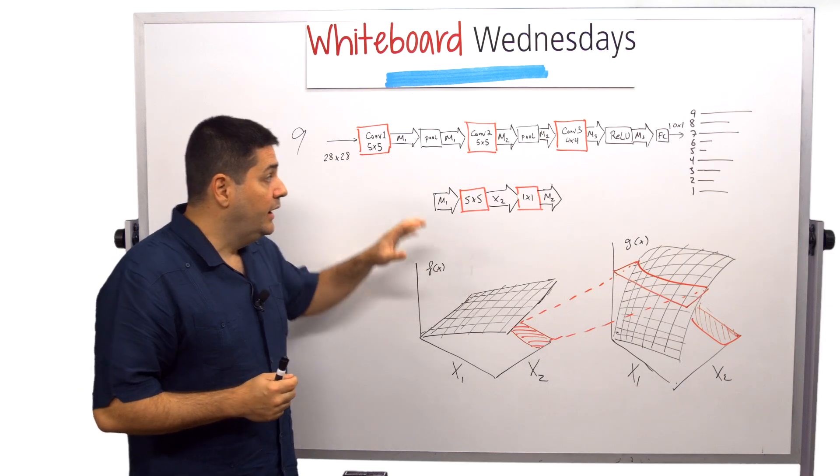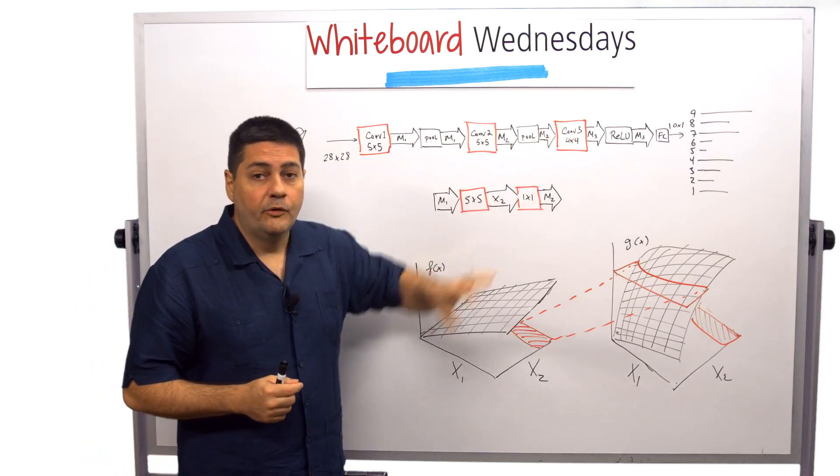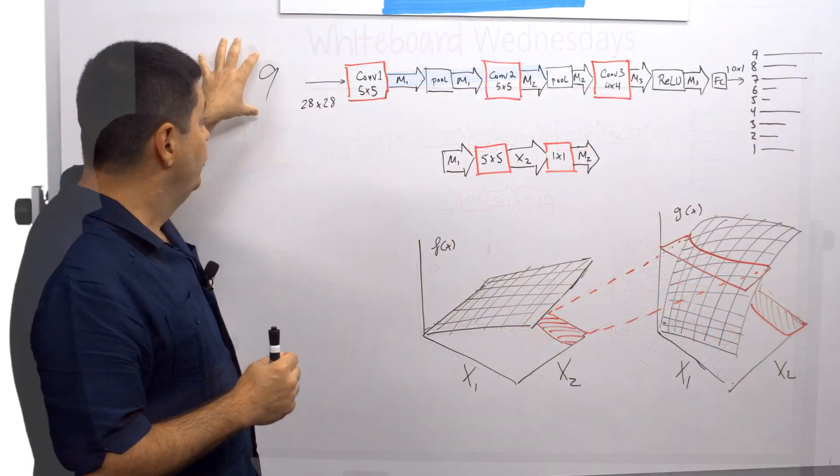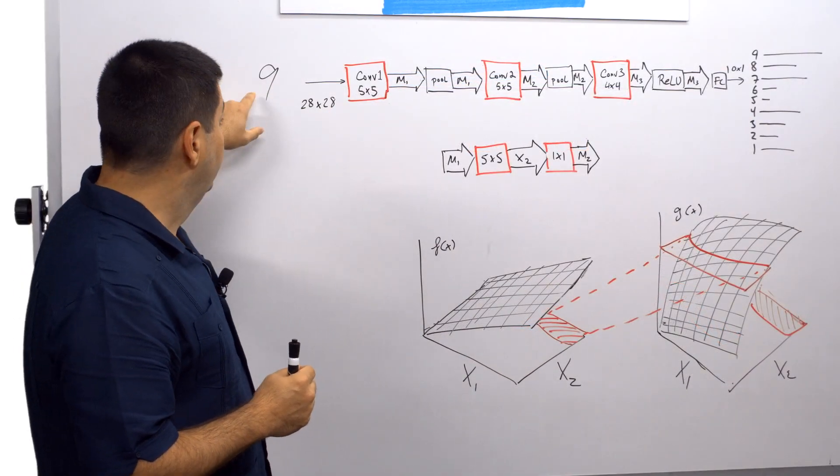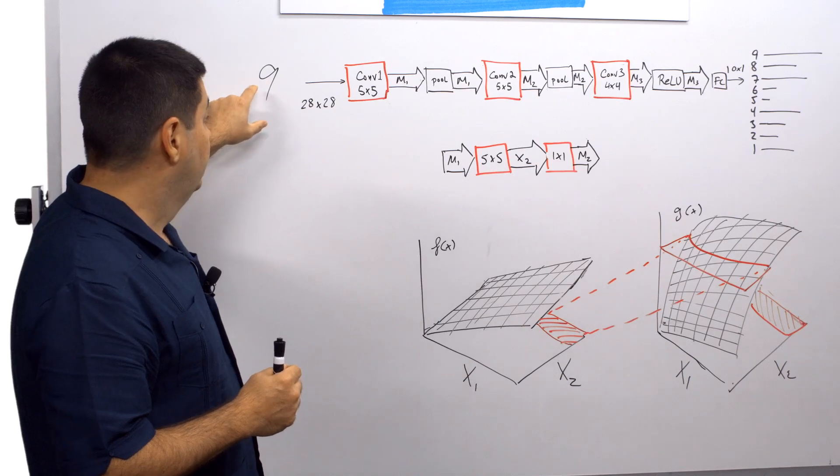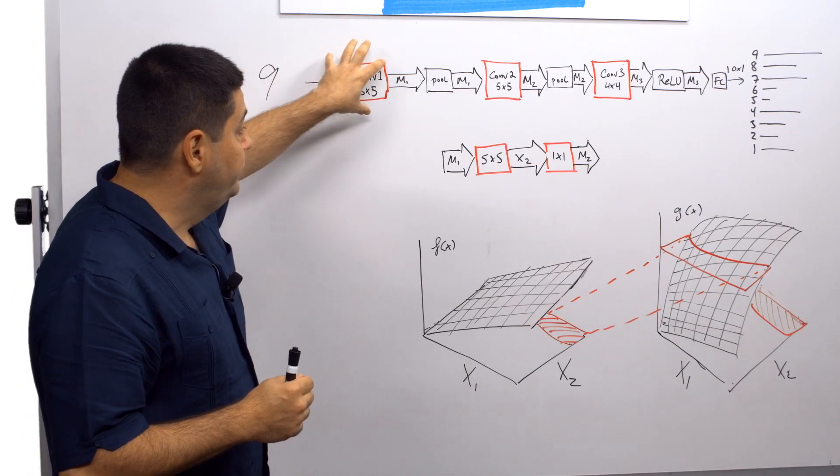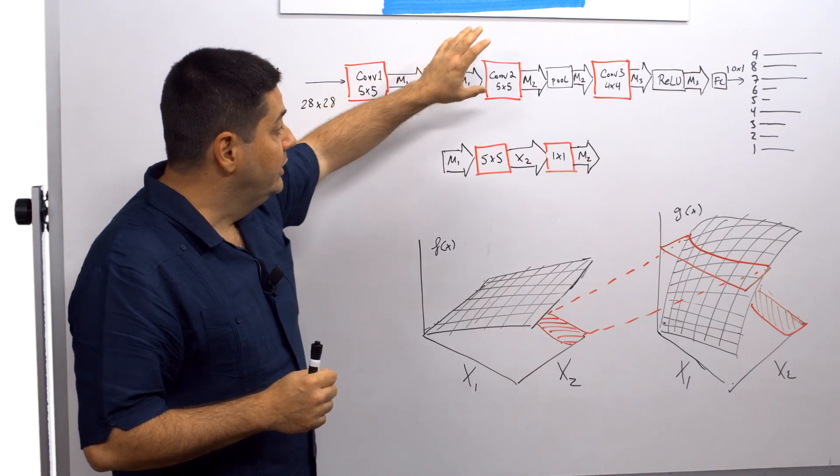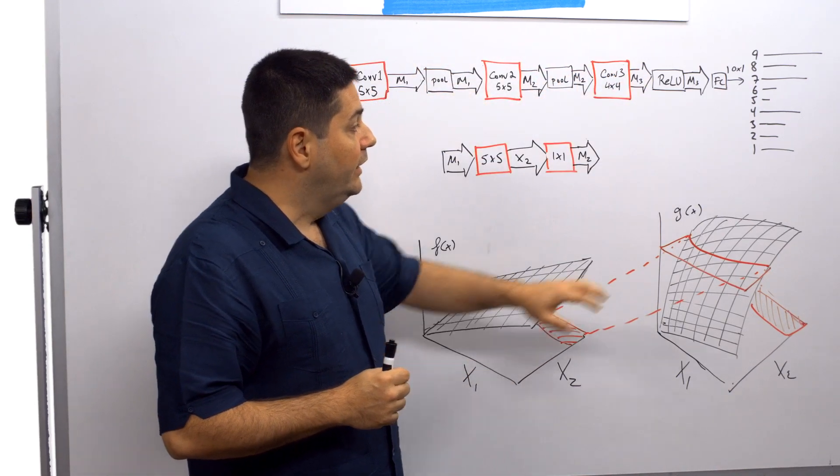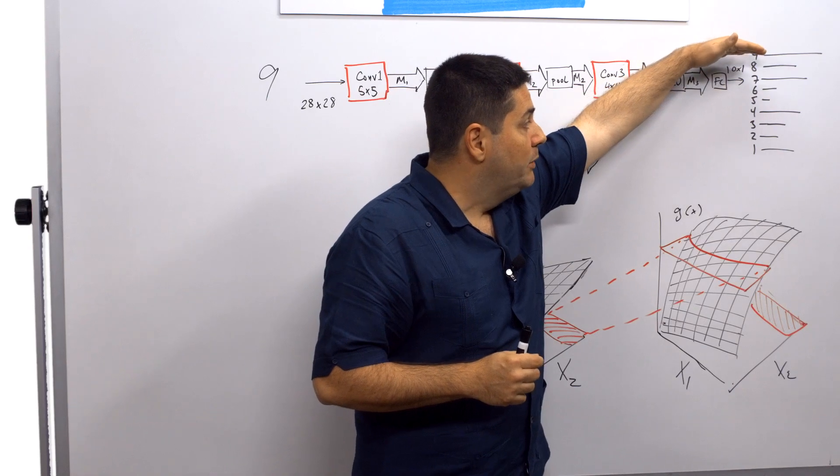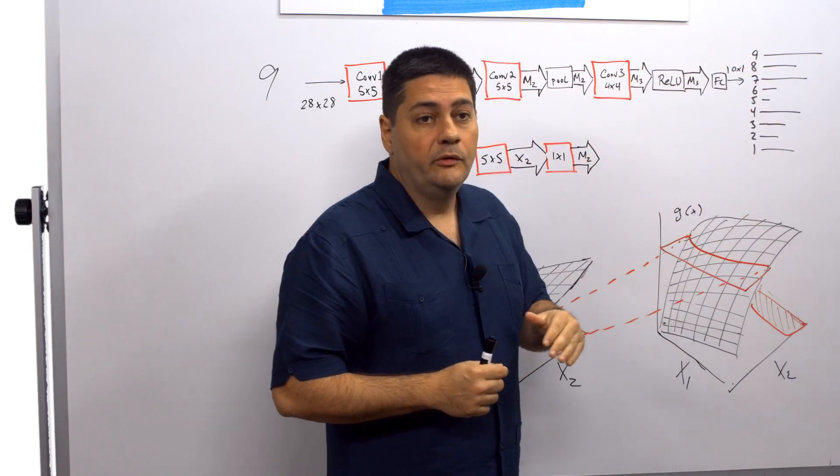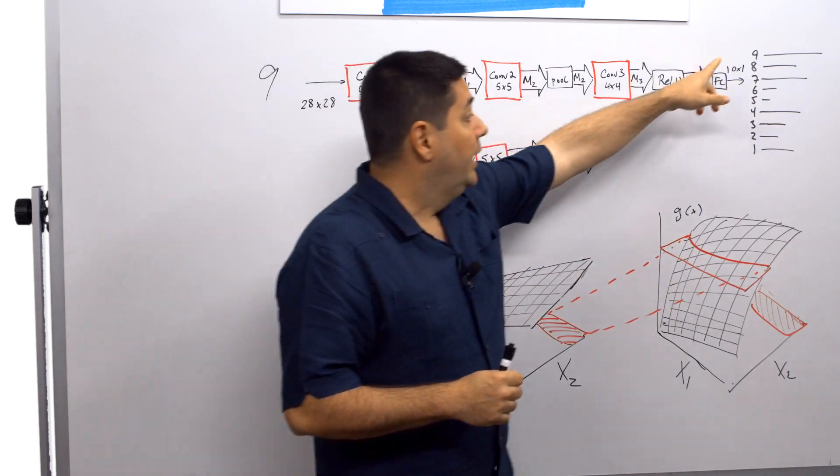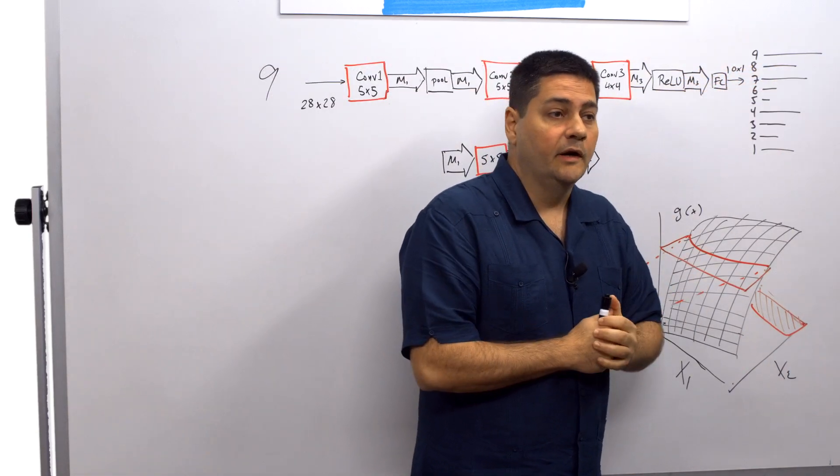So let's start by looking at this simple network for handwritten digit recognition. In goes a 28 pixel by 28 pixel handwritten digit, a number 9 here. It goes through a series of convolutional layers with some decimation layers and activations. And finally, you have a series of probabilities for each possible digit. So in this case, a 9 went in and the highest probability is a number 9. That's the one we detected.